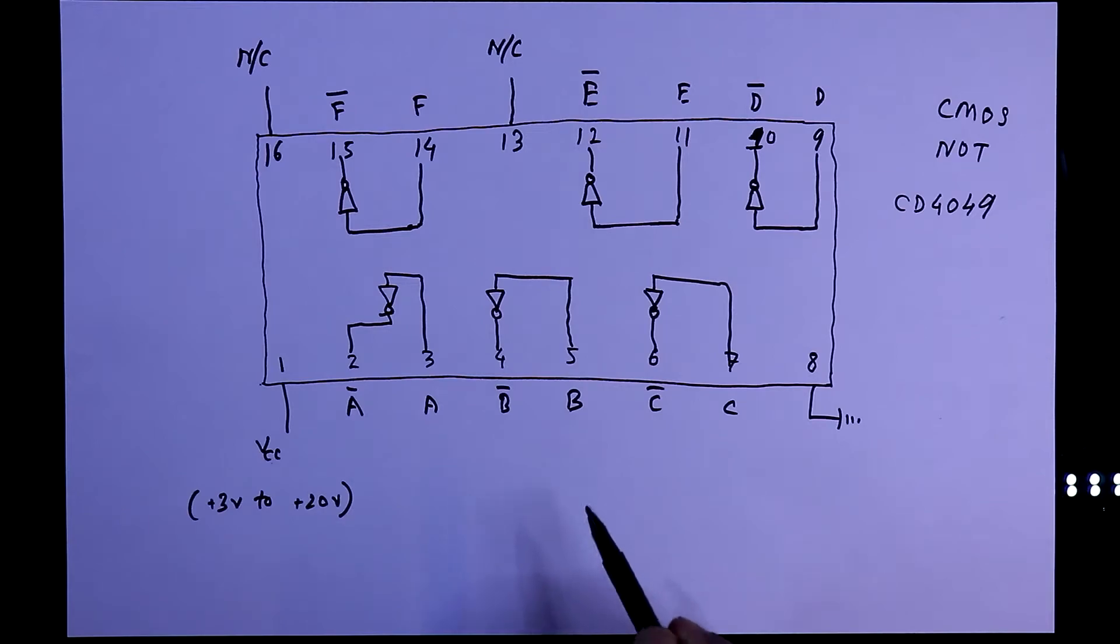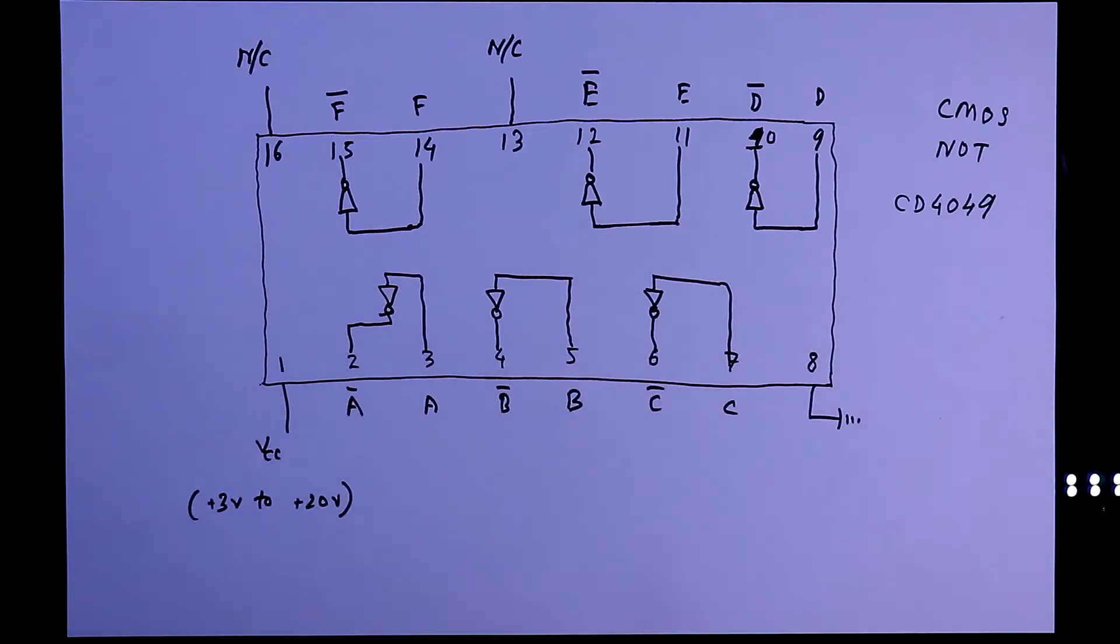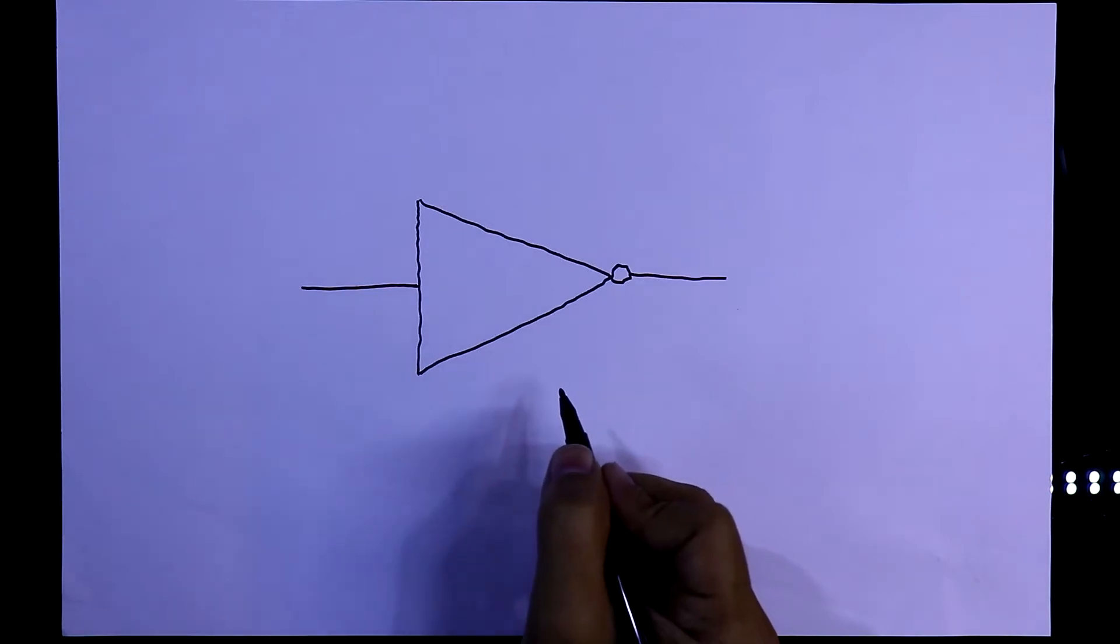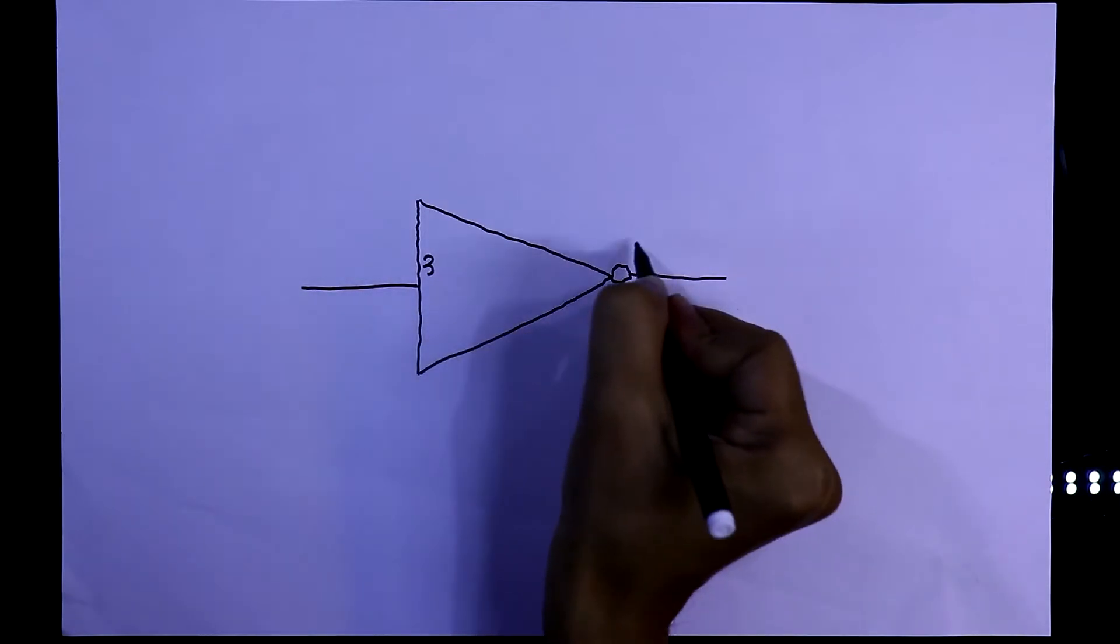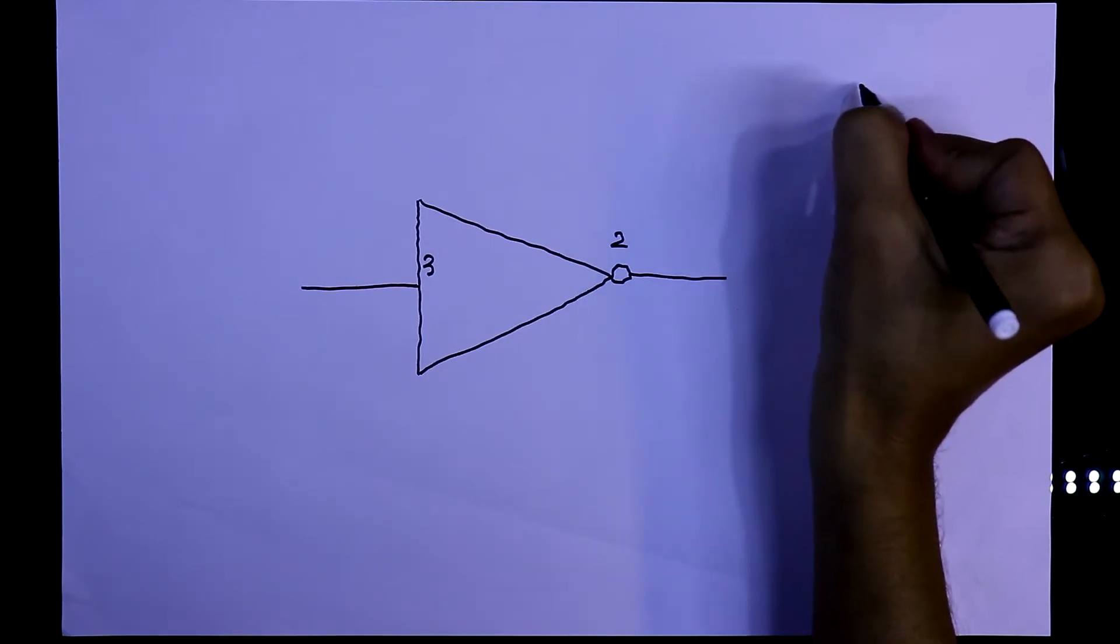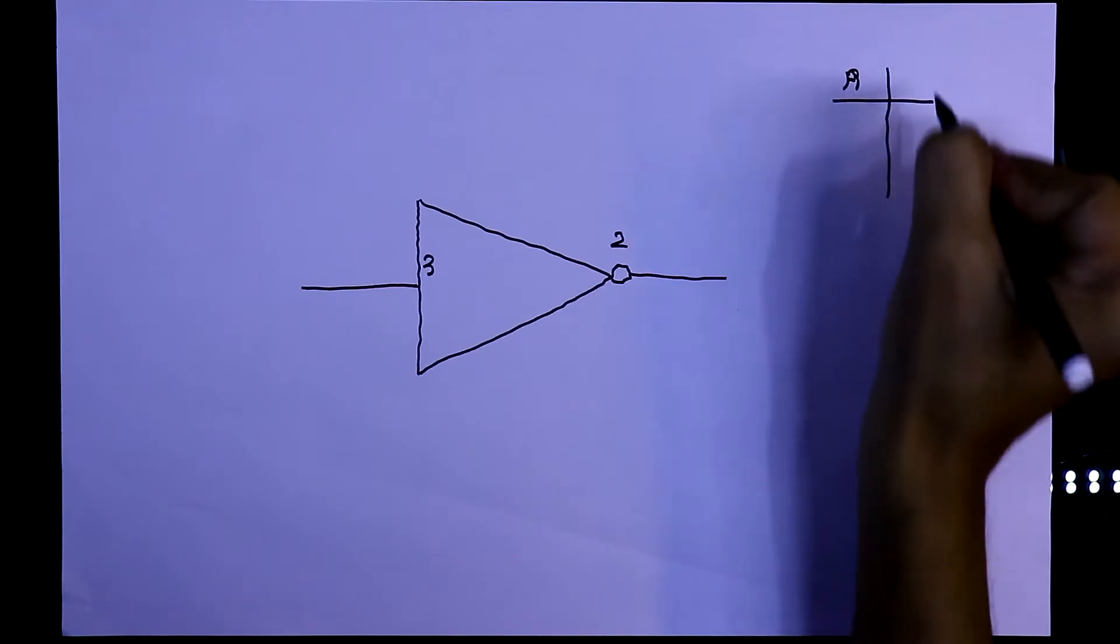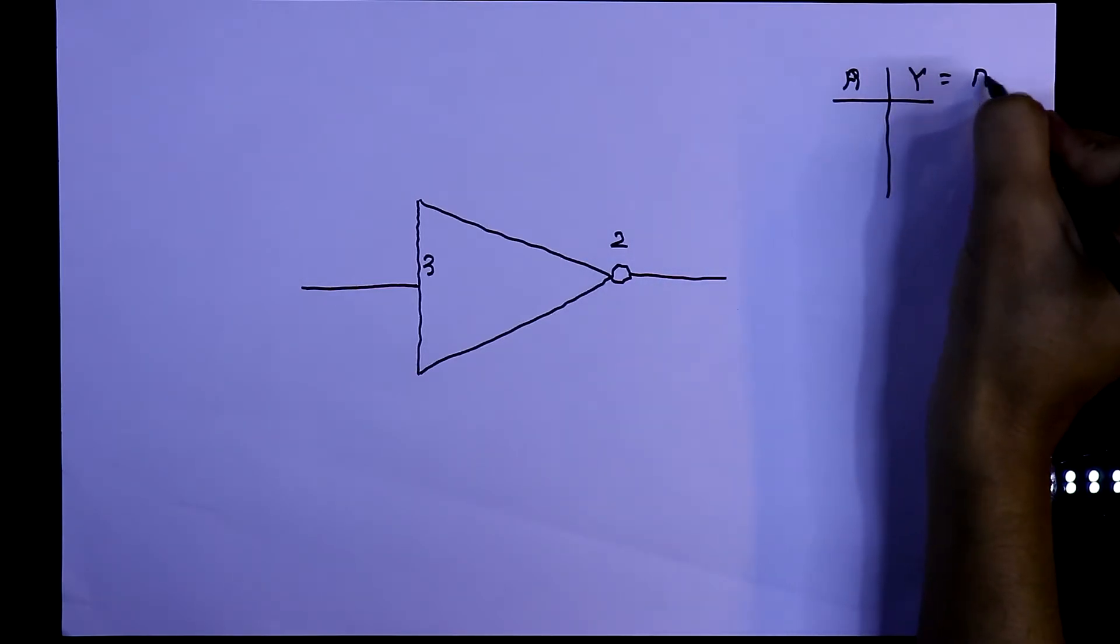So in this way the IC will work. In the breadboard, we will see only gate 1. Here we have gate 1. Its input is pin number 3 and output is pin number 2. And its truth table is A is input and Y is the output. Y equals A inverse.